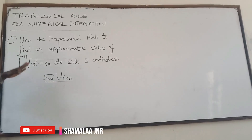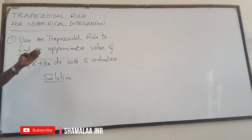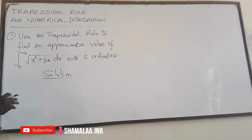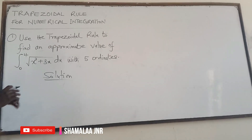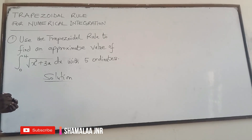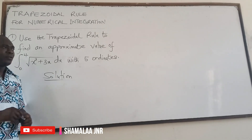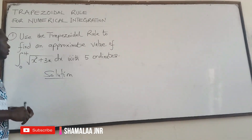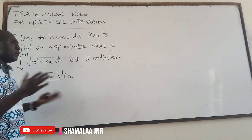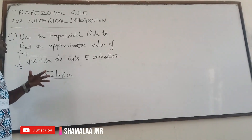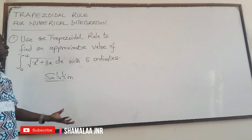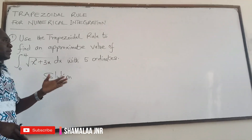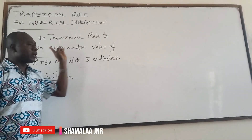The essence of using numerical rules is that there are some integrals which are very difficult to evaluate. So we use numerical methods to get approximate values for those integrals, and one of the methods we normally use is the trapezoidal rule.